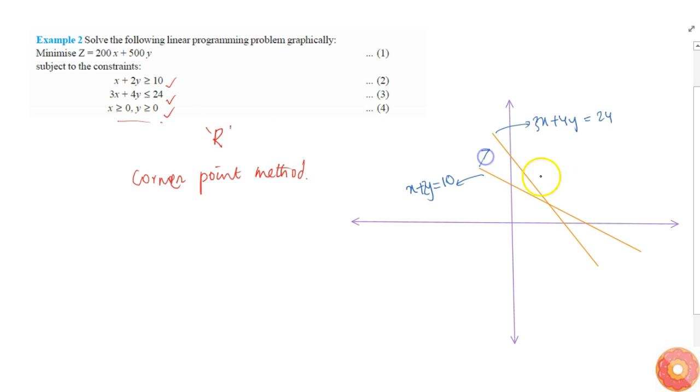For 3x plus 4y less than 24, the region is towards the origin side. The two other constraints are x greater than 0, y greater than 0, so that means the first quadrant.